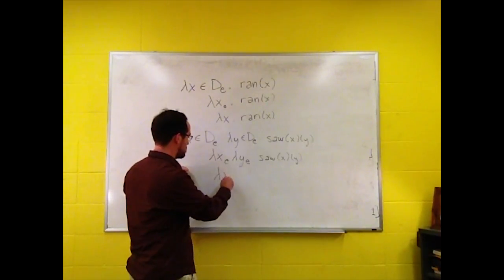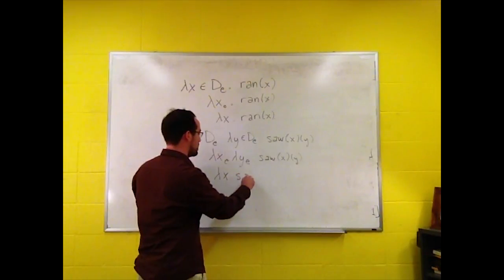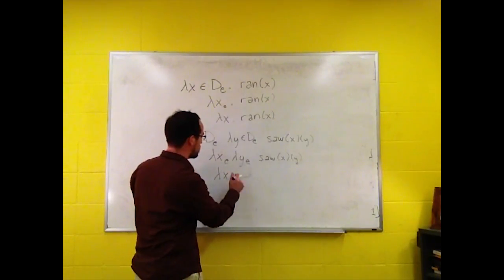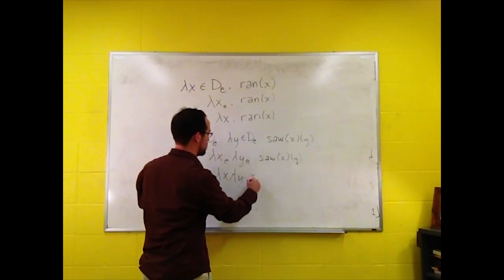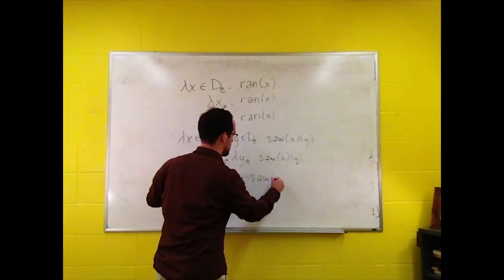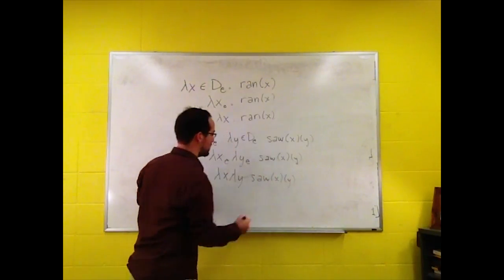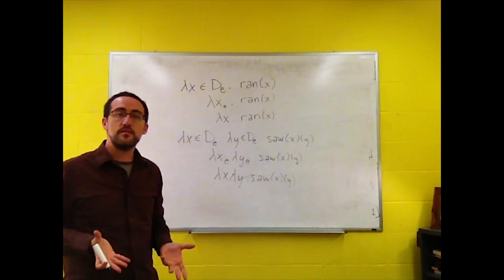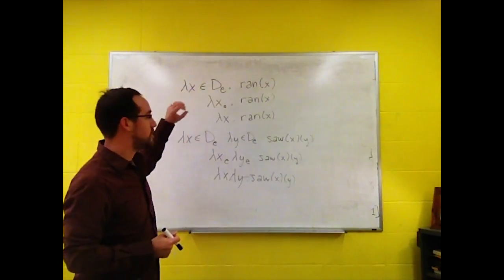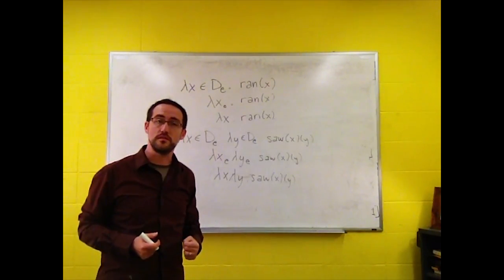Sounds like a nice Kansas storm is coming in. So, of course, we can write that even more simply as something like this. And that is a simple way to abbreviate domain conditions, and we do this for all sorts of functions.